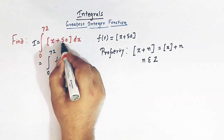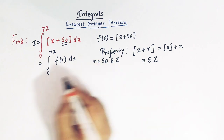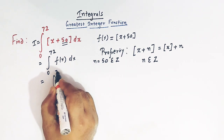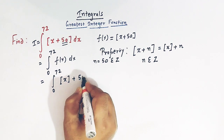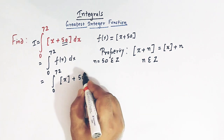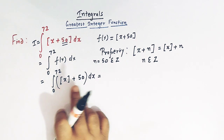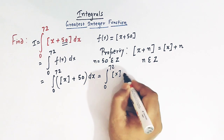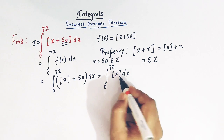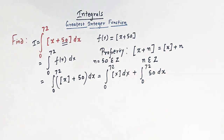Here we see that we have 50 for n, and 50 is an integer. So we can now write this integral as 0 to 72, and here we can write greatest integer of x and then we can write plus 50 due to this property, and here we have dx. So now we can separate these two integrals. The first one is integral from 0 to 72 of greatest integer of x, plus integral from 0 to 72 of 50 dx.